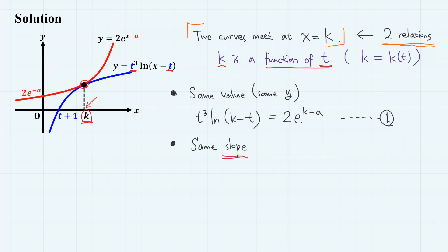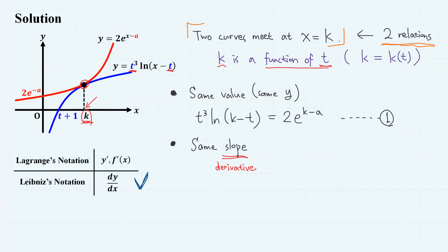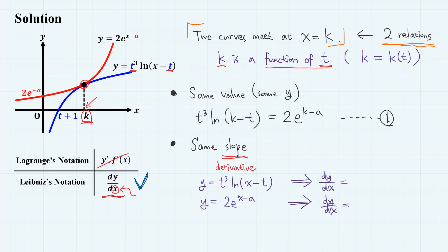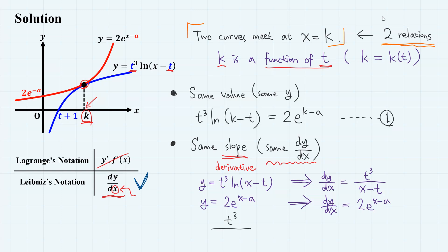Second, two curves have the same slope at that point — that is, the same derivative value at x equals k. We'll use Leibniz notation for derivatives, because we have to take derivatives with respect to more than one variable throughout the solution. For y equals t cubed ln x minus t, dy/dx equals t cubed divided by x minus t. For y equals 2e to the power of x minus a, dy/dx equals 2e to the power of x minus a. So the slope condition gives t cubed divided by k minus t equals 2e to the power of k minus a. Let's call this Equation 2.